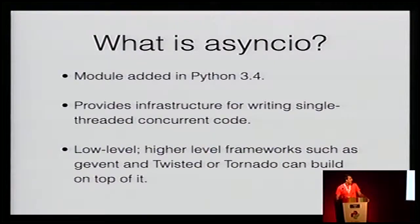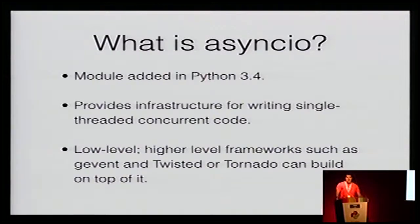Async I/O — I think async I/O is to Python as big data is to middle management. It's a new module in Python 3.4, and it gives you the infrastructure for writing single-threaded concurrent code. It's meant to be quite low-level so you can use other frameworks like Tornado and Twisted on top of it. It's Python 3.4 mainly. I'll go through two of the core concepts — the most important ones — which are also the ones used in the code.